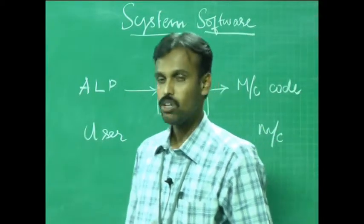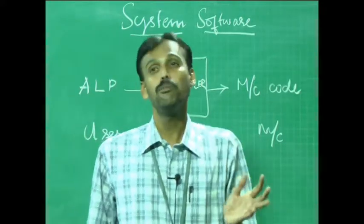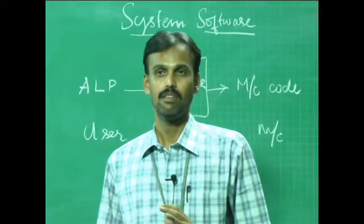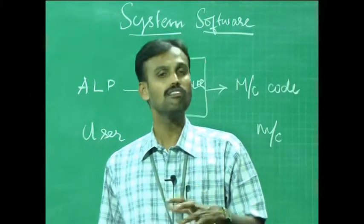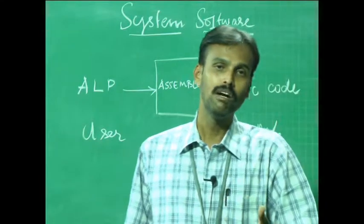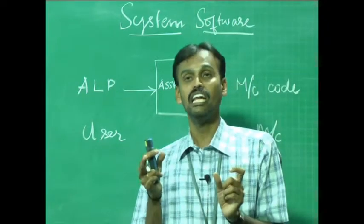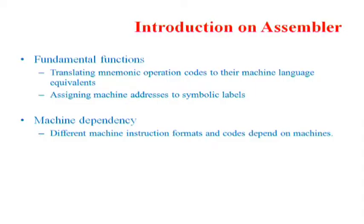The fundamental functions of assemblers: assemblers translate mnemonic operation codes to their machine language equivalents. They assign machine addresses to symbolic labels used in the program. Every statement in the assembly language program can optionally have labels, and these labels have to be transformed to their machine equivalent addresses. So an assembler translates mnemonic operations to machine language equivalents and assigns machine addresses to symbolic labels.